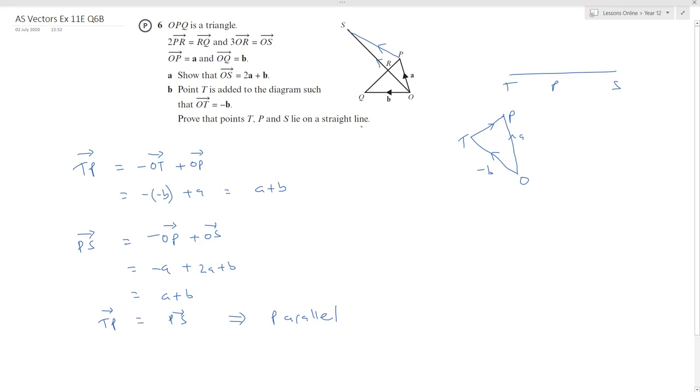Now they must lie on a straight line because the vector TP has got P in it and the vector PS has also got P. As they both contain P, T, P, and S must lie on a straight line.